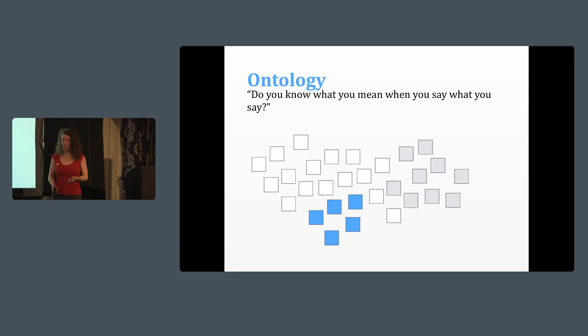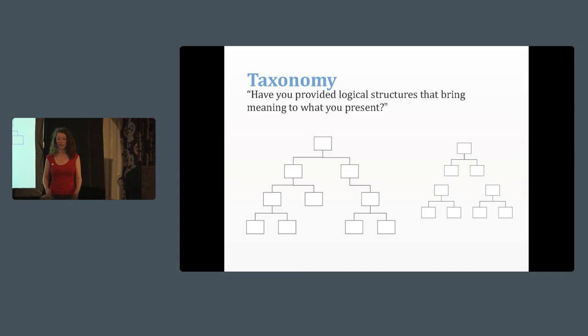And then secondly it's about taxonomy. This is often what people think of when I say information architecture. Have you provided logical structures that bring meaning? How are you organizing things? You can have site maps. You can organize things in facets. Just thinking about how does everything hang together and how does it make sense? Because we have to make sure while our products are constantly evolving, if you start content first you have to figure out is there a place for content across what we're building and will there be, where's going to be spaces for content in the future?